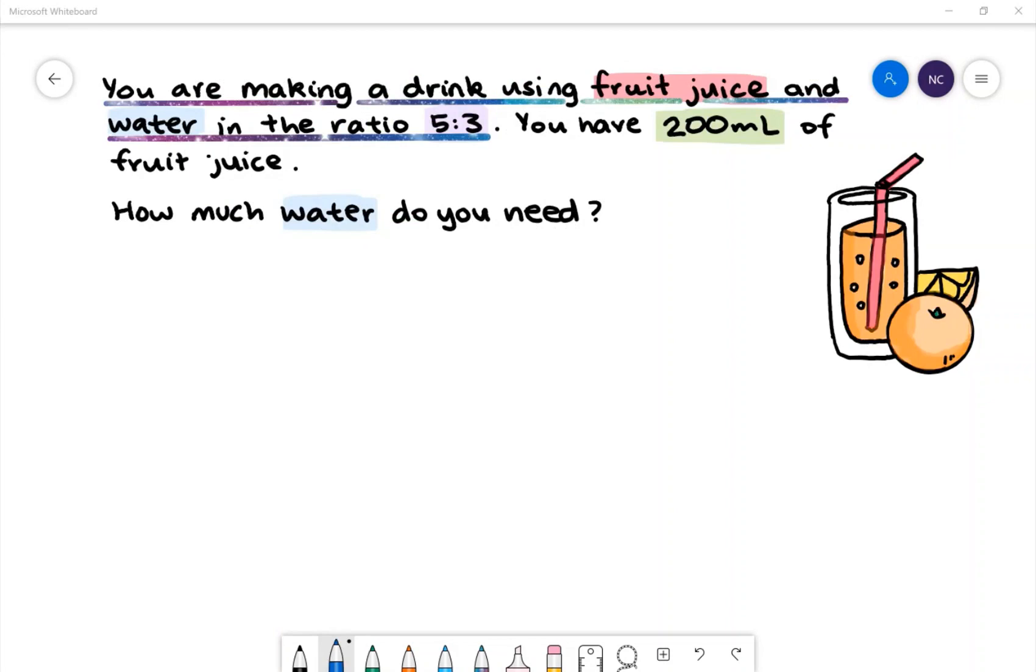Here is our last example. You are making a drink using fruit juice and water in the ratio 5 to 3. You have 200 milliliters of fruit juice. How much water do you need?